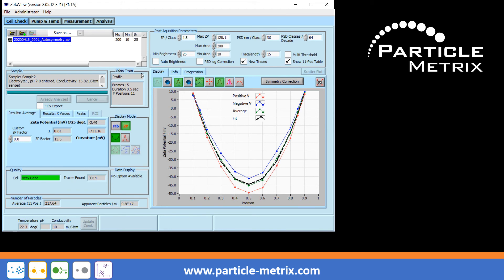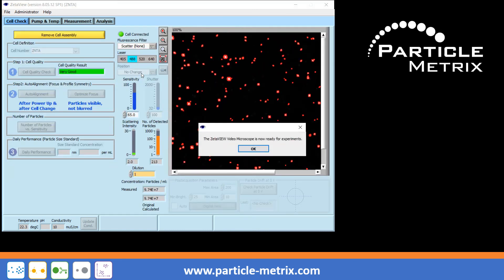If the parabola looks flat, inverted or jagged, the measuring cell must be cleaned. The ZetaView instrument is now ready for measurements.